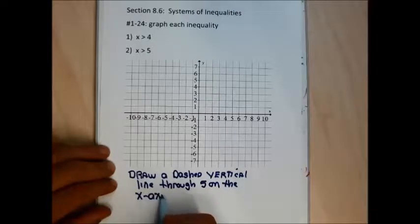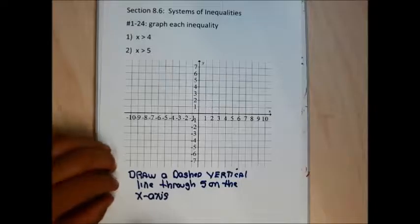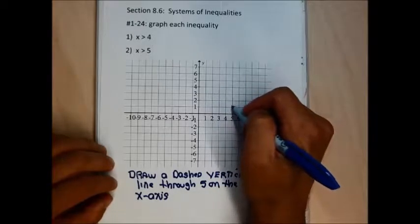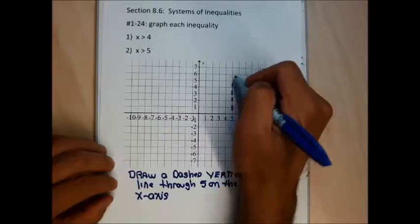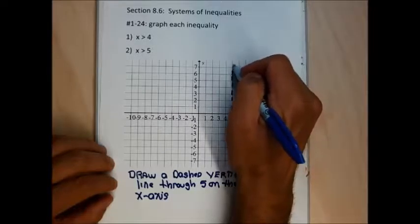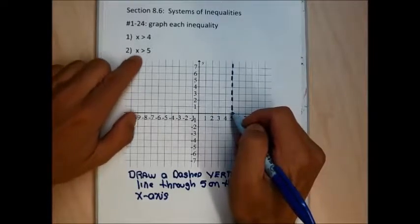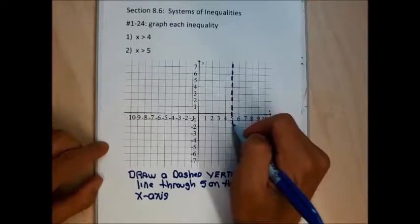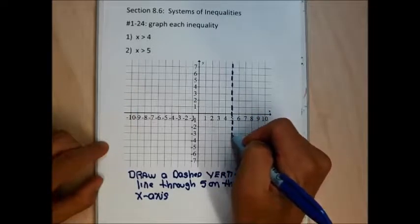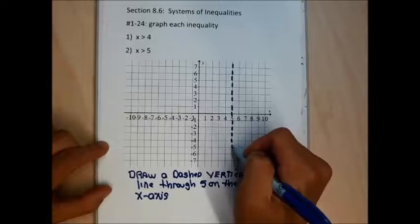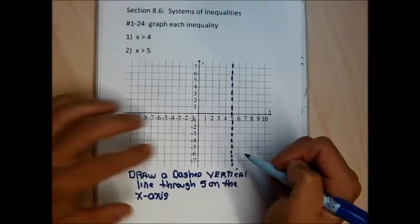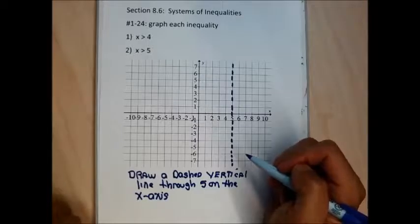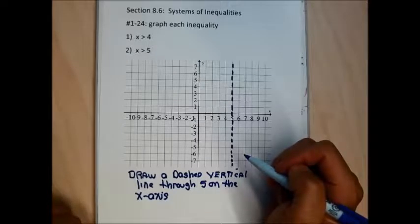This dashed line is going to identify every point that has an x-coordinate specifically equal to 5. None of these points need to be included in my answer, because my answer is only supposed to identify points on the graph that have x-coordinates bigger than 5. The dashed vertical line is going to separate the points that have x-coordinates less than 5 from the points that have x-coordinates bigger than 5.